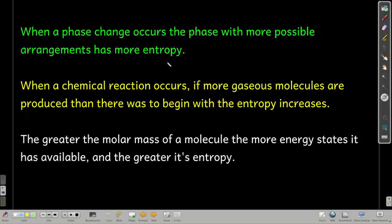When a phase change happens, if you go from a phase that has fewer possible arrangements to one that has more, the entropy increases. For example, going from a solid to a liquid — melting. A liquid has more motion; the particles can move around more and there are more possible ways of arranging them. In a solid, the particles are pretty much locked in place — they can vibrate, but they can't really move around.